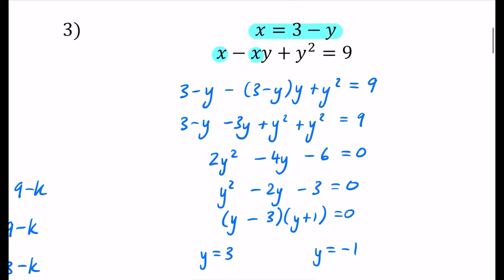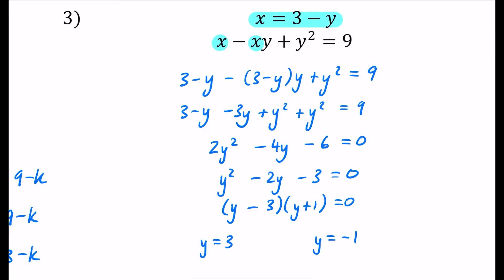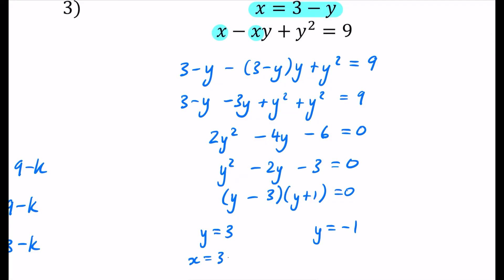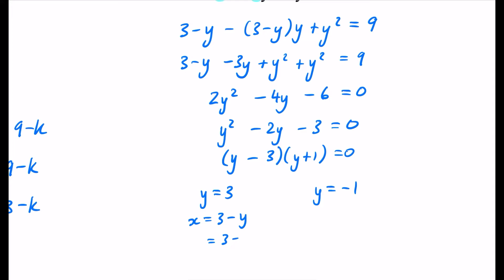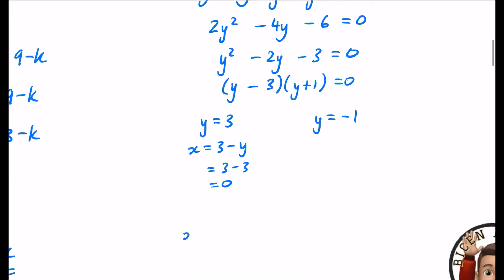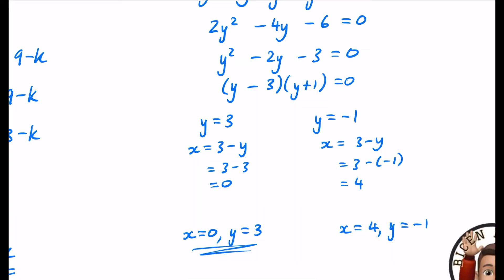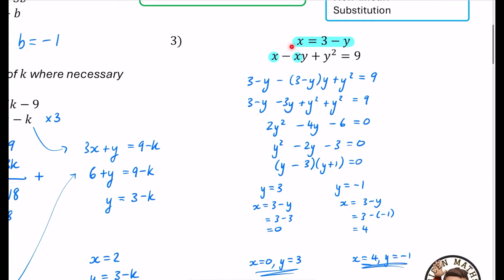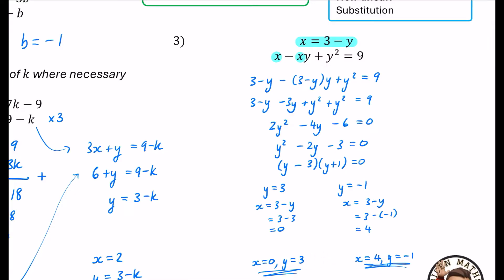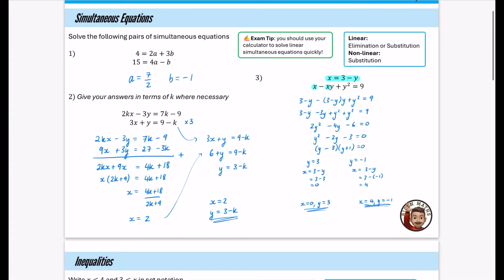That's not the end — we still need to find x. Using x equals 3 minus y: when y equals 3, x equals 3 minus 3, which is 0. So one solution pair is x equals 0 and y equals 3. When y equals minus 1, x equals 3 minus minus 1, which is 4. So the other solution is x equals 4 and y equals minus 1. If you were to plot these equations on a graph, these would represent the coordinates where they intersect.